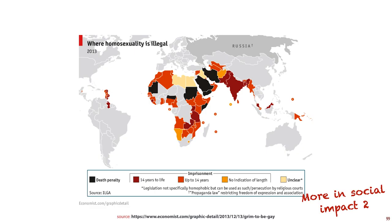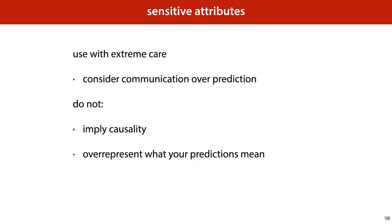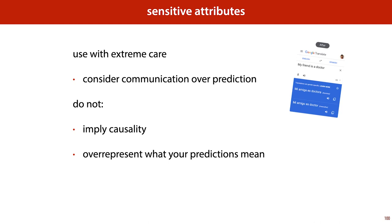So, if we cannot just decree that sensitive attributes should never be used as features, can we perhaps agree that they should never be used as targets? Unfortunately, this is also not an easy call. Many algorithms work without explicit targets, and these often learn representations that can be used to predict all information from the data, including the sensitive attributes. Also, in some situations, building a system that explicitly does what we consider harmful may be an effective way to warn people of which dangers exist. For example, the classifier built to predict a person's sexuality from profile pictures had as its stated intent exactly this: to warn people that they may be exposing sensitive information purely by putting their image online. In eight countries in the world, homosexual acts carry the death penalty, so it can be important for gay people to know that just by putting a photograph online, they may be exposing themselves to a higher degree of scrutiny. All we will say about sensitive attributes is that you should use them with extreme care, consider communication over prediction, and you shouldn't imply causality or overrepresent what your predictions mean.